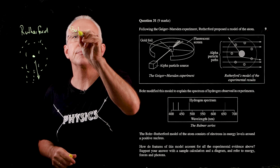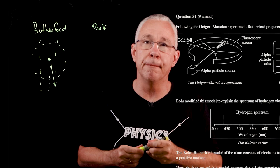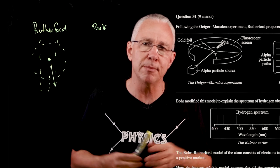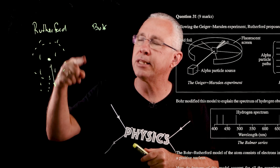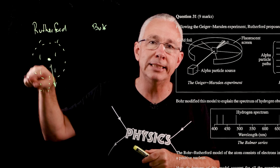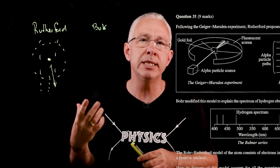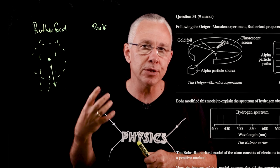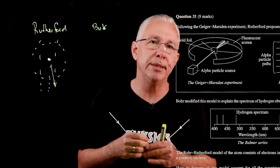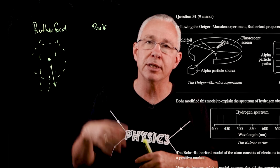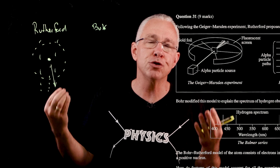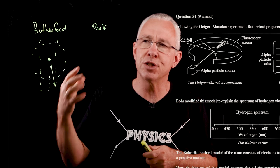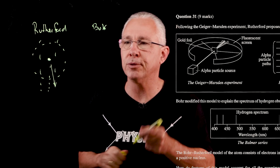The next step is to talk about Bohr. Bohr had a significant problem with Rutherford's model: electrons rotating in an orbit have a changing velocity, meaning they're accelerating. By Maxwell's equations, those electrons should be emitting electromagnetic radiation, losing energy, and spiraling inward — but they don't. So Bohr modified the model.